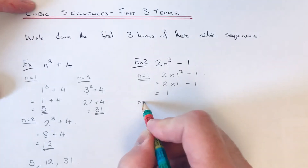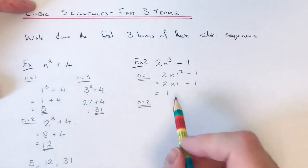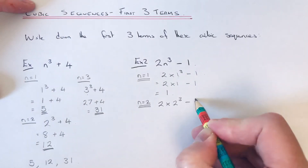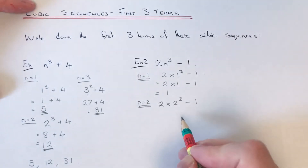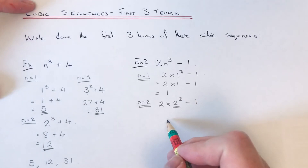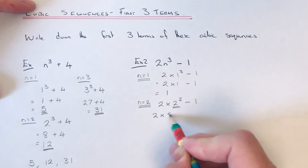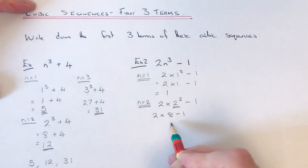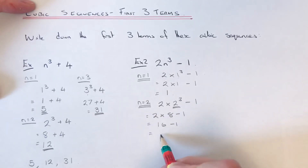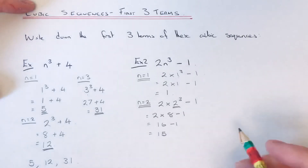For our second term we substitute n equals 2, so it'll be 2 times 2 cubed, take away 1. We need to work out the cubed bit first: 2 cubed is 2 times 2 times 2, which is 8. So it'll be 2 times 8, take away 1 — 2 times 8 is 16, take away 1 gives 15. So 15 is our second term.